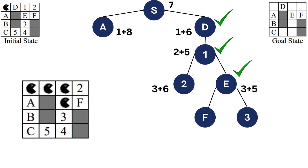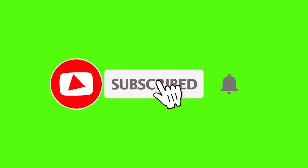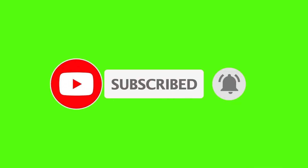From here, the rest is left as an exercise for the viewer to complete: find the full path that the A* algorithm discovers from the starting node to the goal state, and also determine whether the heuristic function is admissible or not. If you found this video helpful, don't forget to like, share, and subscribe for more videos on data science and AI. See you next time.